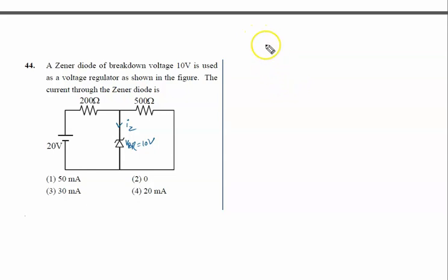So we forget the generator. Net current in the circuit is given by V by R. V is 20 and net resistance is 700 ohm. So voltage across 500 is the voltage across generator, that is i into 500. That is 20 upon 700 into 500, so ultimately it is 100 by 7. 100 by 7 is greater than 10.